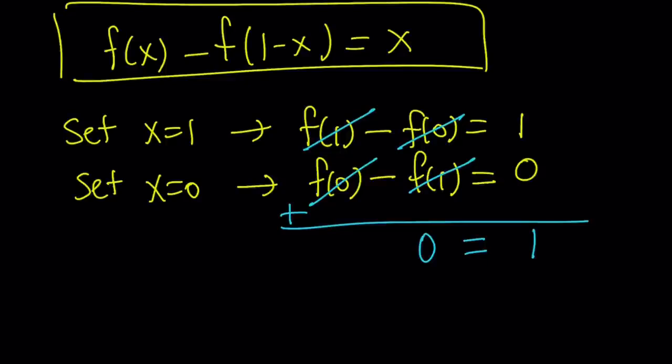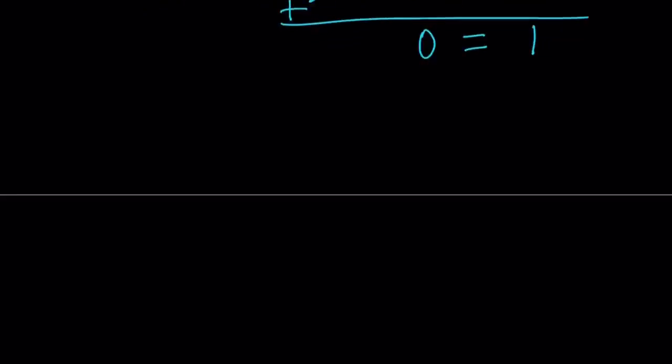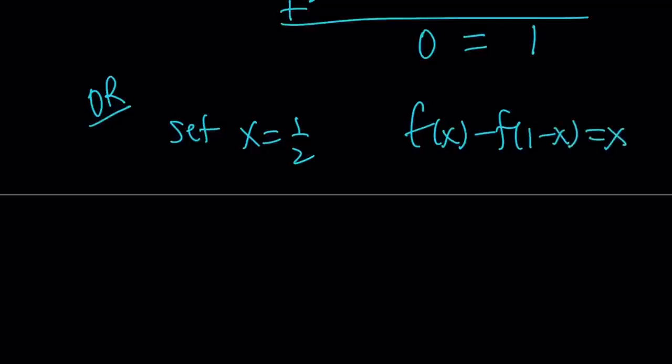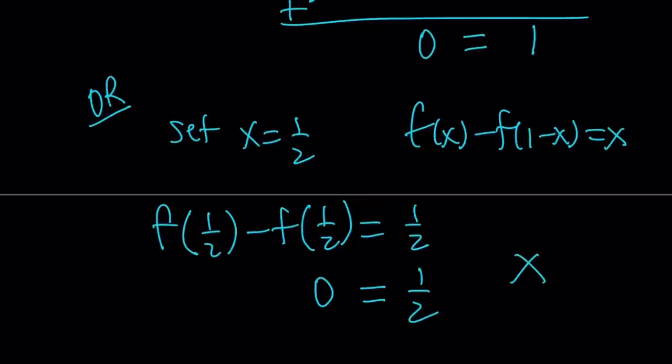So this means that there are no functions that satisfy this. Wait a minute. Is there another way to look at it? Of course. Let's take a look from another perspective. How about setting x equals 1 half? It's a shorter way to arrive at the result, because notice that when x equals 1 half, x and 1 minus x are equal. f of 1 half minus f of 1 half equals 1 half. Another thing that doesn't make sense, 0 equals 1 half. No way! So that means there are no possible values.